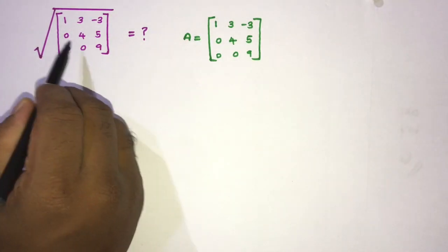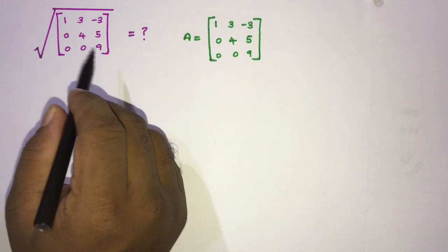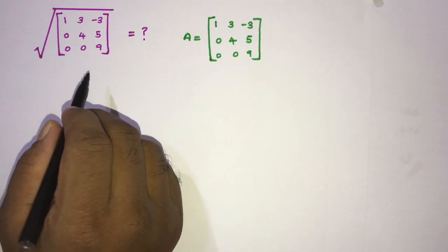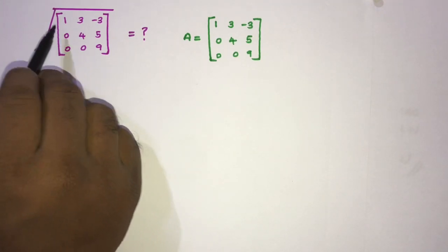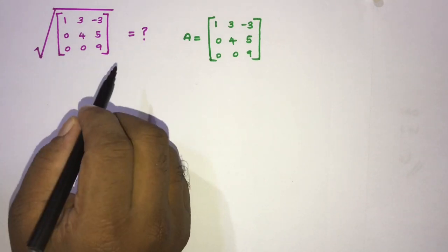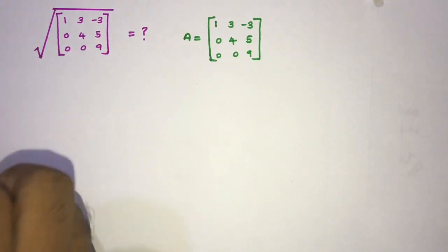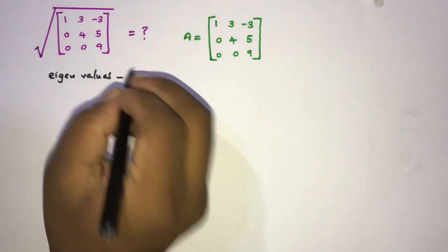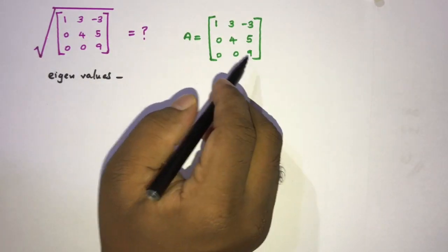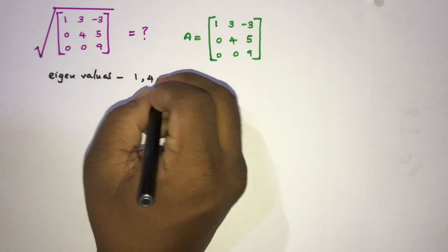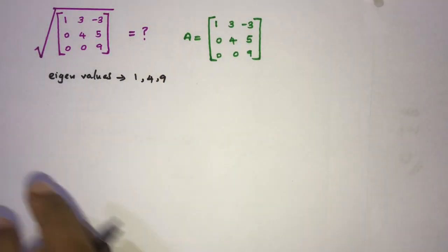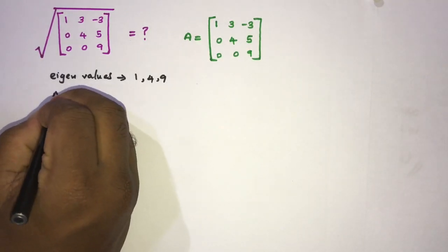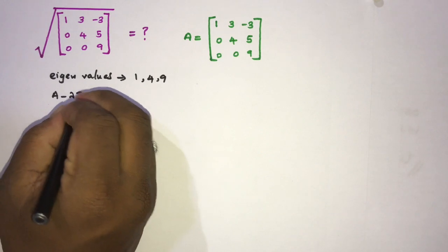First of all, we know this is an upper triangular matrix. Also, the matrix has three distinct eigenvalues, so we know this is a diagonalizable matrix. The eigenvalues are 1, 4, and 9.